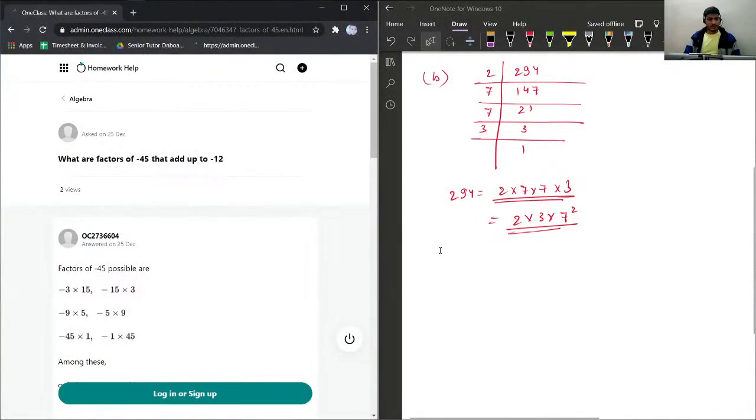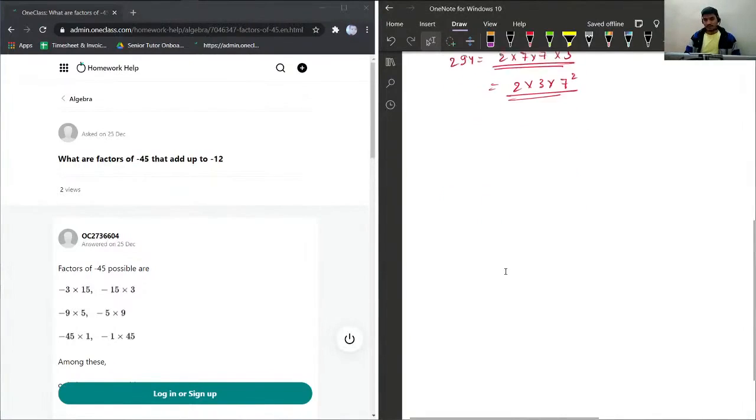So we have another question. We need to find the factors of negative 45 such that the factors add up to negative 12. First I'll just scroll the page and I'll take black point for this question.